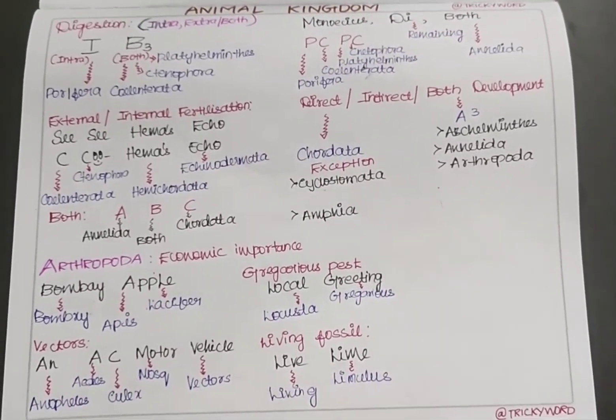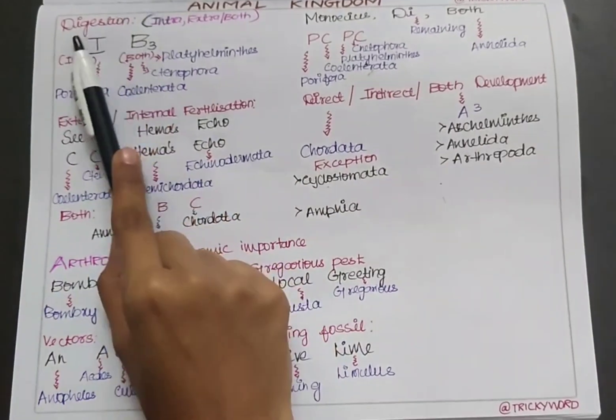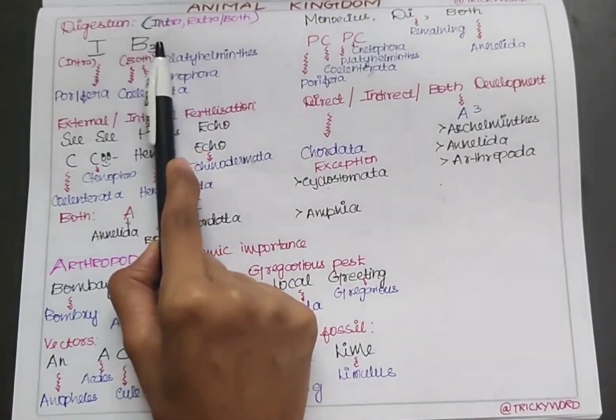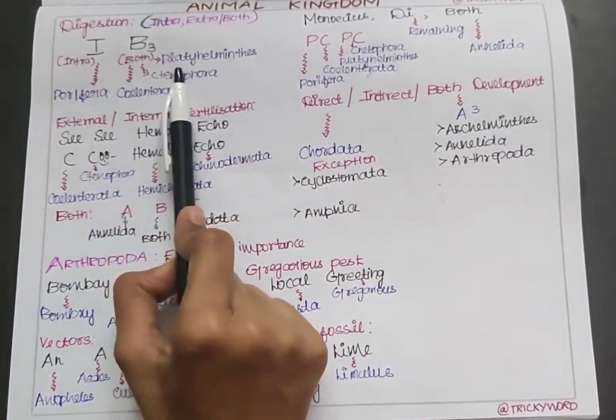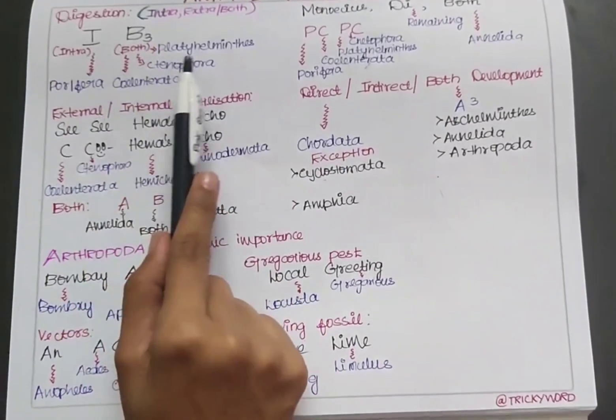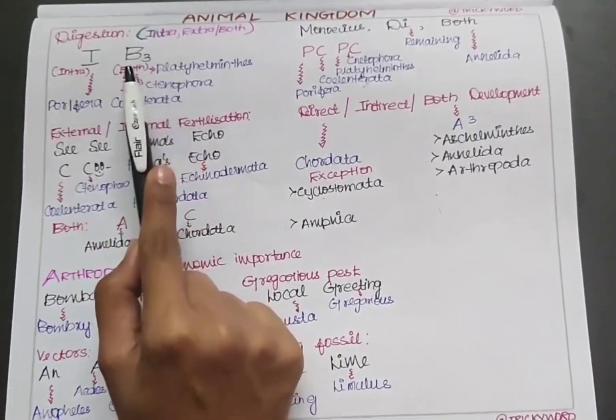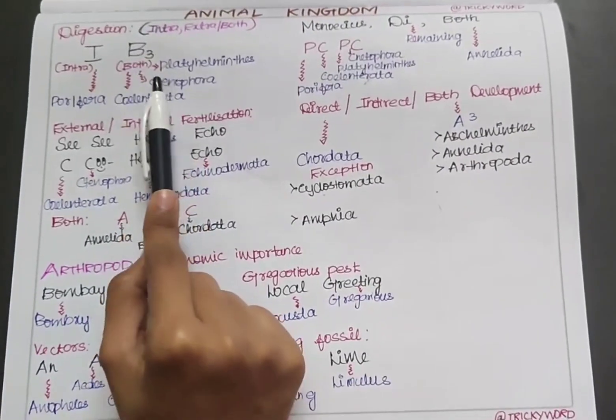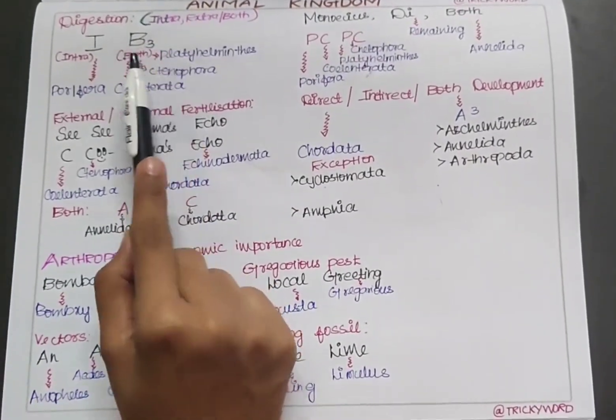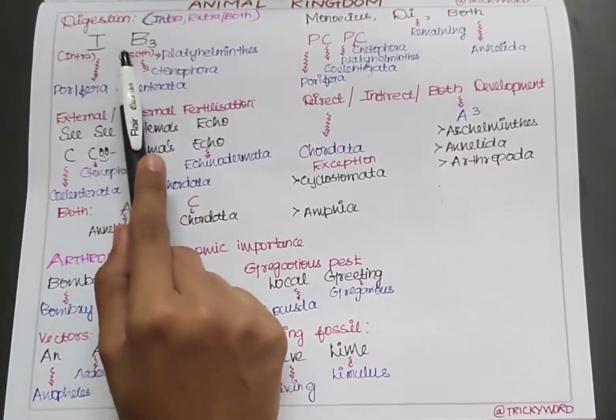The first topic is digestion. To know whether digestion is intracellular, extracellular, or both, the short trick is IB3. Here, I stands for intra and B is for both. Why have I mentioned three? Because for 'both' we have three categories. First, we'll talk about I.